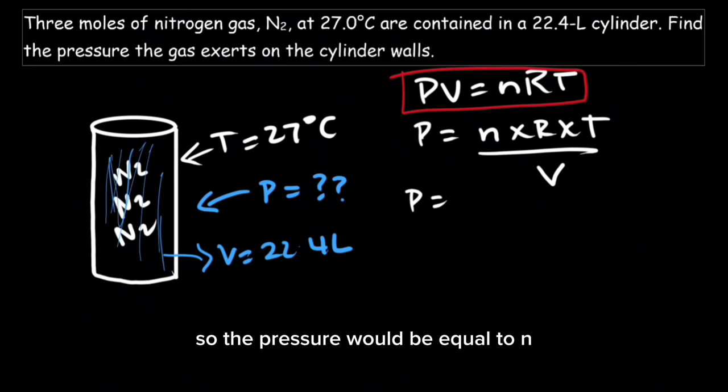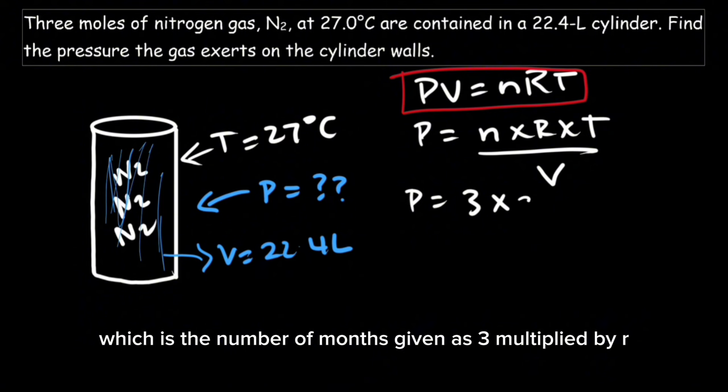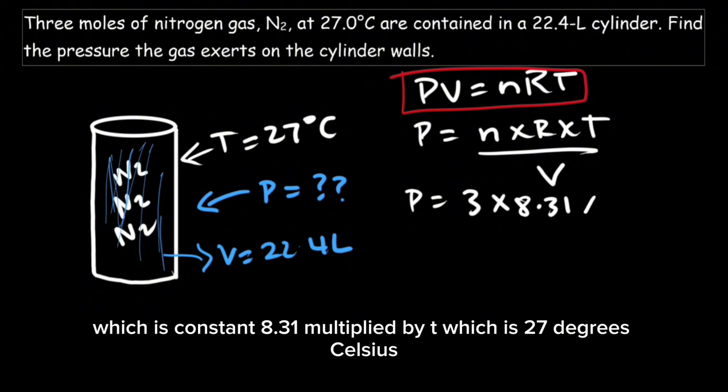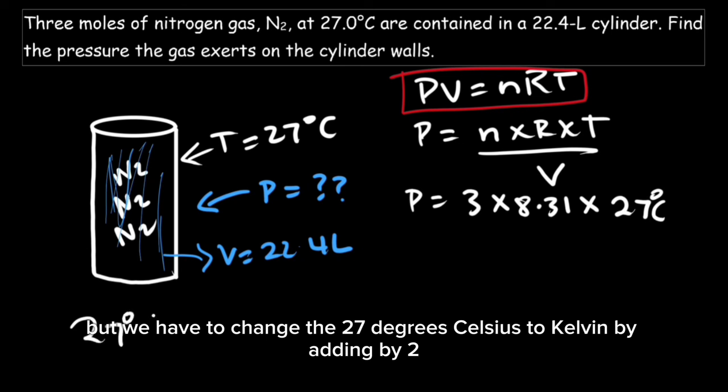So the pressure will be equal to n, which is the number of moles given as 3, multiplied by R, which is the constant 8.31, multiplied by T, which is 27 degrees Celsius. But we have to change 27 degrees